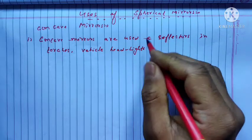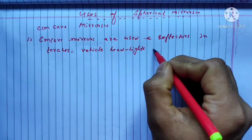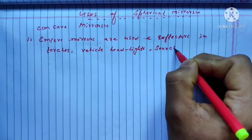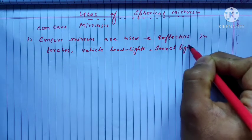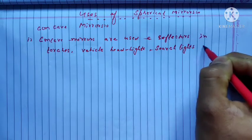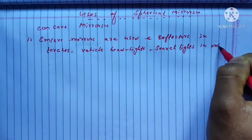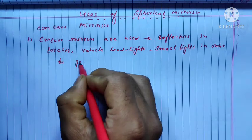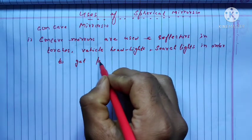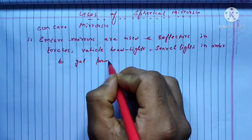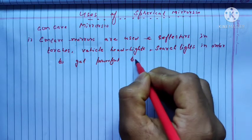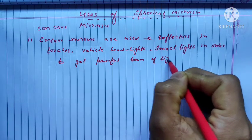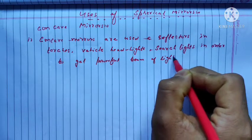Concave mirrors are used as reflectors in vehicle headlights and searchlights in order to get a powerful beam of light.